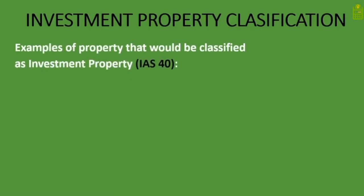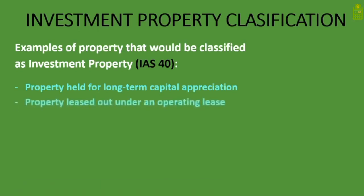Here are examples of property classified as investment property. First, property held for long-term capital appreciation — if a company buys a property and waits for it to increase in value, it is holding it for capital appreciation and it will be classified as investment property. Second, property leased out under an operating lease.